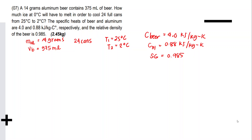What we need to find: if you analyze this, we need to know how much heat the ice must absorb in order to melt — so that the beer and aluminum can cool down. The ice absorbs heat (positive), which equals the heat released by the beer and the can as they cool.